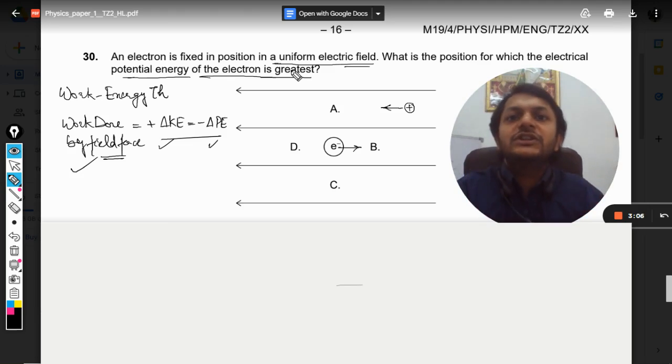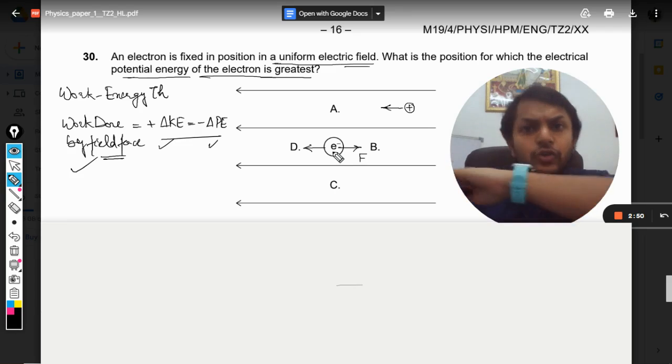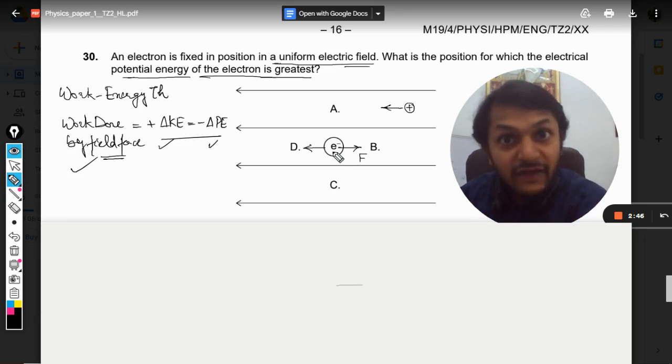It means we must move the electron in the direction opposite to the direction of the force experienced by the electron. So the force experienced by electron is this, so we have to move like this. We have to move towards D to increase the potential energy because your field is trying to take the electron towards right but we are pushing it towards left.